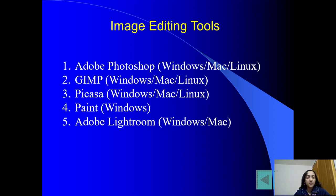Second, GIMP — GIMP is the alternative for using Adobe Photoshop. GIMP होता है Graphic Interchange Manipulation software tool. This is an open source tool, GIMP basically free होता है, जो की Windows, Mac, and Linux के लिए available है. यह Adobe Photoshop का alternative है, free है, open source है. Third one is Picasa.